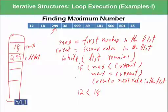Current is pointing to the next value. So current is now pointing to 299. Then it is moving again to the next iteration because list remains. This loop is true. If max is less than current, max is 18 and current is 299. Yes, the condition is again true. So 299 is assigned to max using this statement. So 299 comes to max.